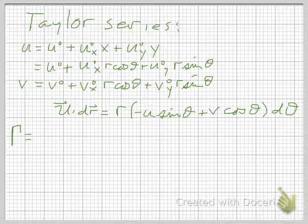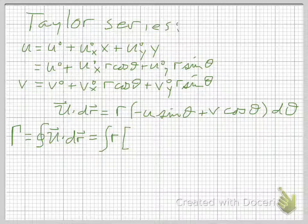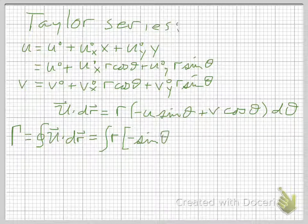Gamma equals, it's the integral around the circle of u dot dr, r, and that will be the integral of r times, we've got negative sin theta times u, so let's separate that out, and then insert our expression for u.